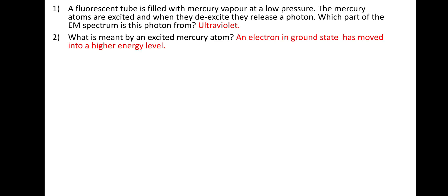So the second one, what is meant by an excited mercury atom? So it's an electron in the ground state has simply moved into a higher energy level.